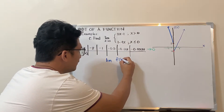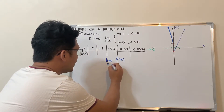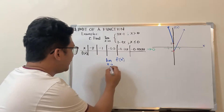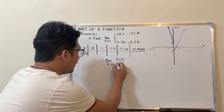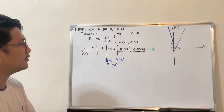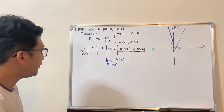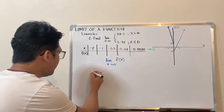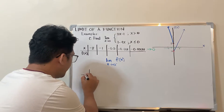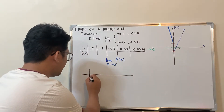We evaluate the limit of the function as x approaches 0 from the left. For the second table, we will approach 0 but this time from the right.